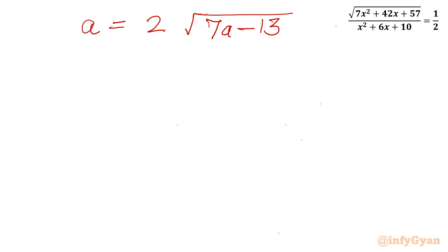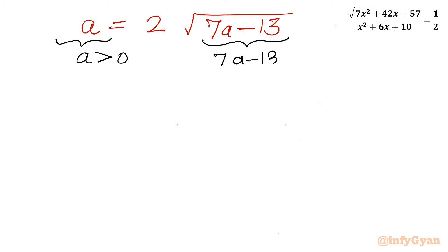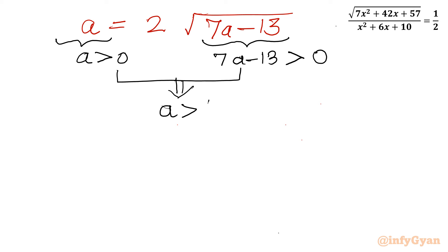Now I will write two conditions. The left hand side will always be positive for real solutions, and of course 7a - 13 should also be positive for real solutions. Taking the intersection of both conditions, I can write a should be greater than 13 over 7, which is approximately 1.85. So we will accept only those values of a which are greater than 1.85.